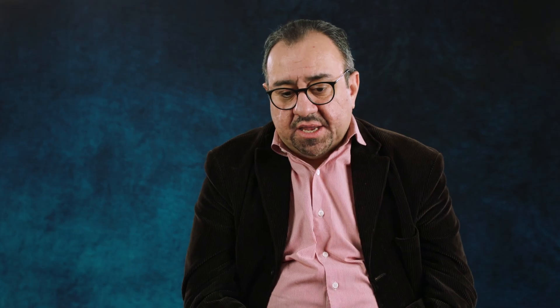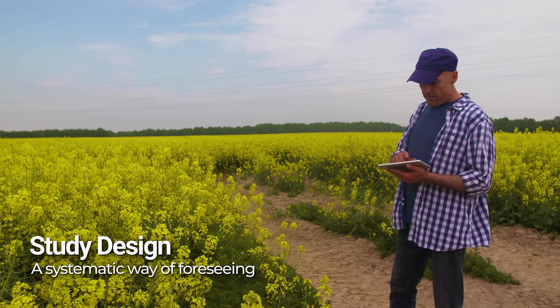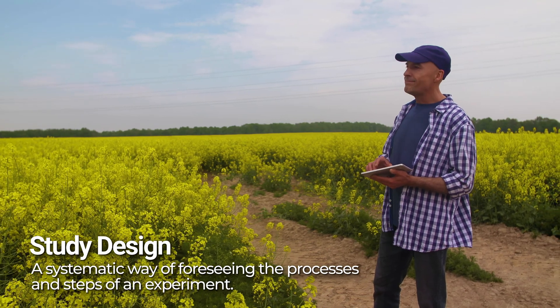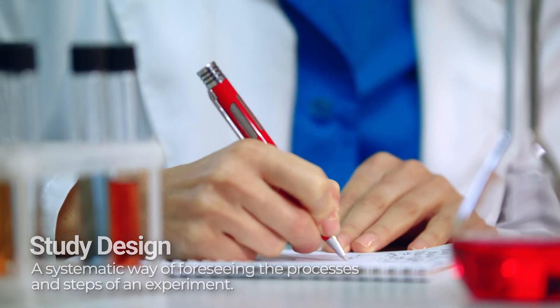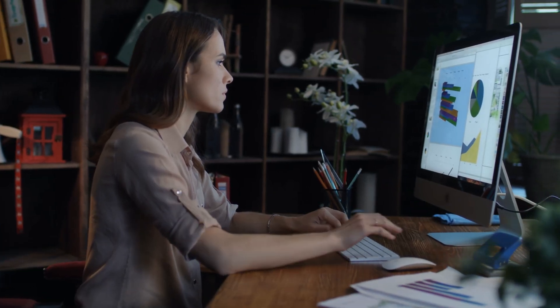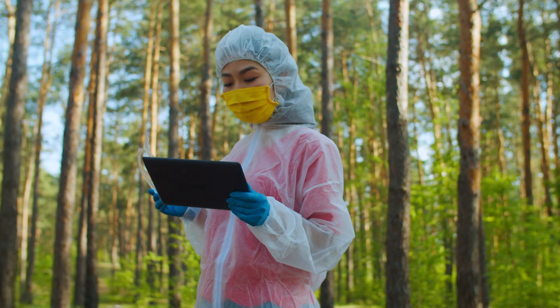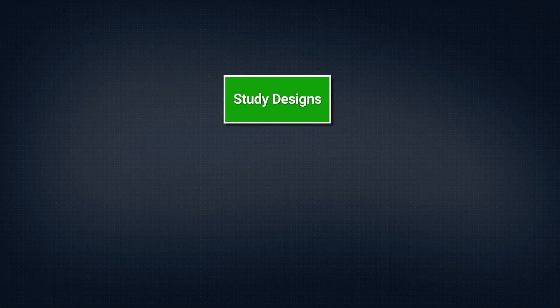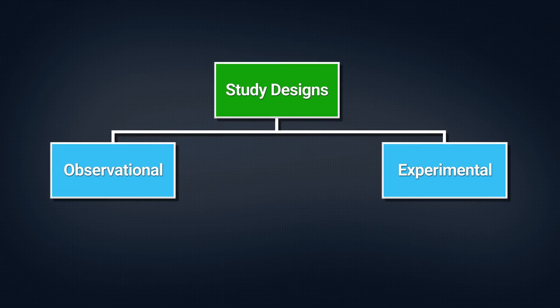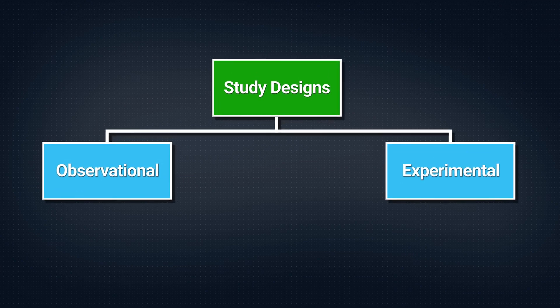Study design is a systematic way of trying to foresee the processes and steps of an experiment or a scientific study, so that we collect the most unbiased type of data we can, and we can utilize that data to build statistical and scientific inferences. There are different types of study designs, broadly divided into two categories: observational studies and experimental types of studies.